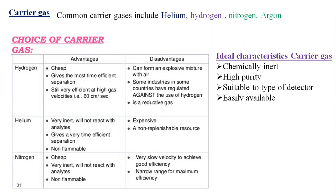Some countries have regulated against the use of hydrogen because of these disadvantages. Helium is very inert — it will not react with any analyte — gives very efficient separation, and is non-flammable. Compared to hydrogen, helium is the better option as it is chemically inert, does not react with anything in the column, and is not flammable. Nitrogen is also cheap and inert, cannot react with any analyte, and is non-flammable, but its separation efficiency is over a very narrow range, which is a disadvantage.